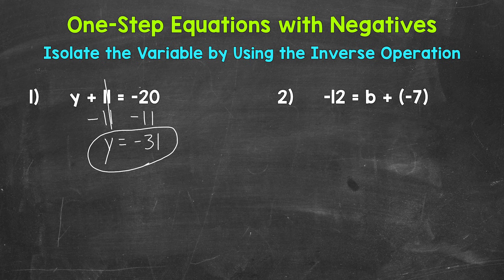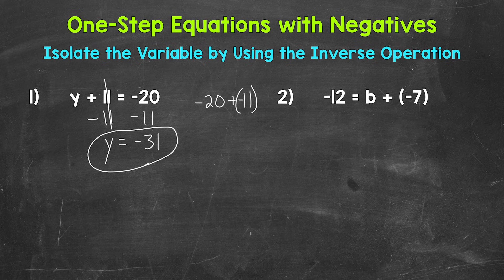One thing I want to mention: it's always an option to come to the side in order to figure out a problem. For example, negative 20 minus 11 we did vertically, but you can rewrite this horizontally if you prefer. When we subtract, we can add the opposite. So negative 20 plus negative 11 gives us that negative 31. Our solution for number one is negative 31.